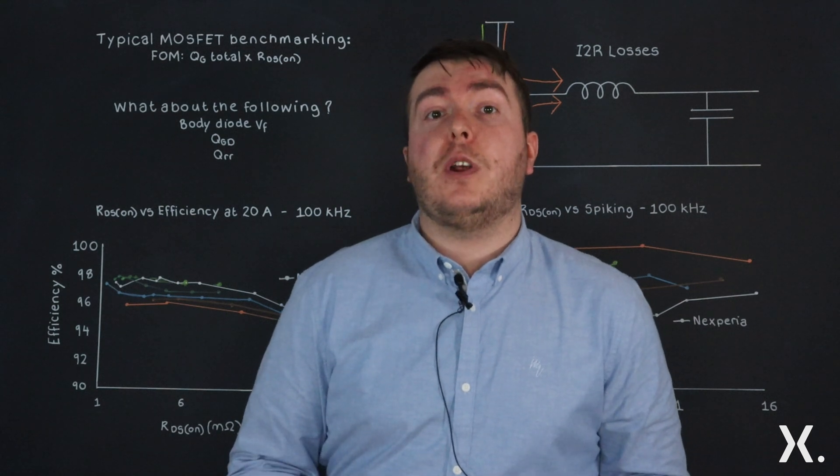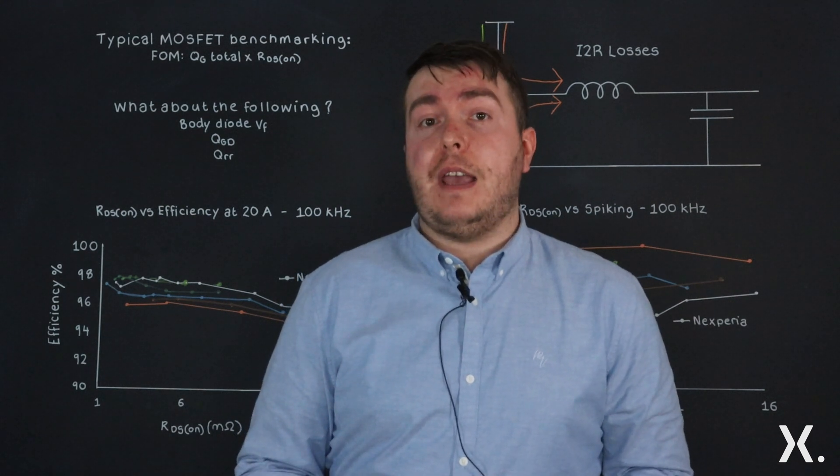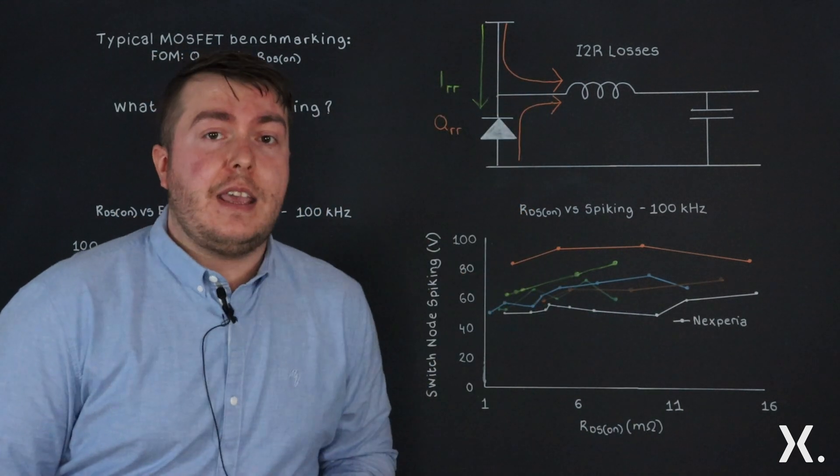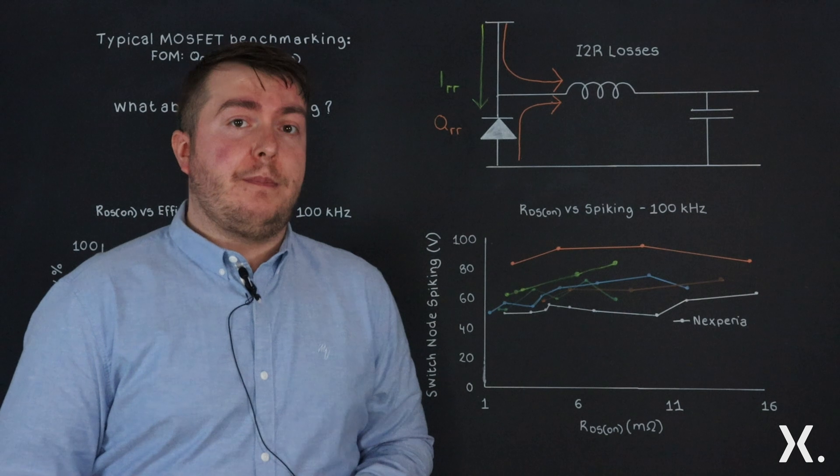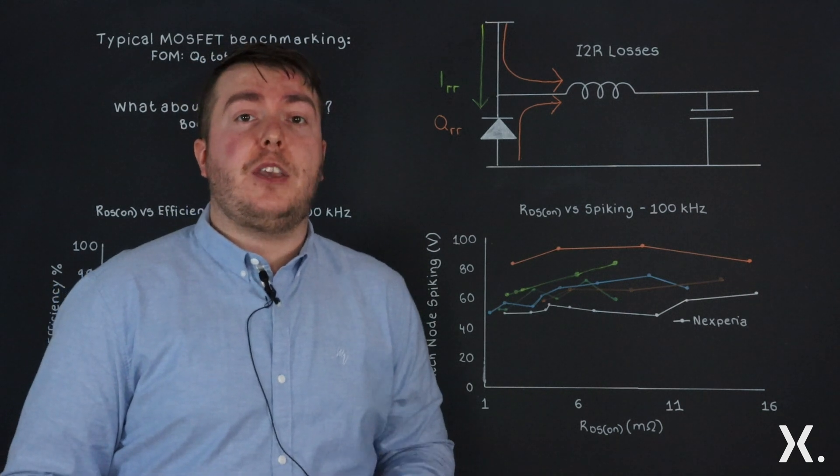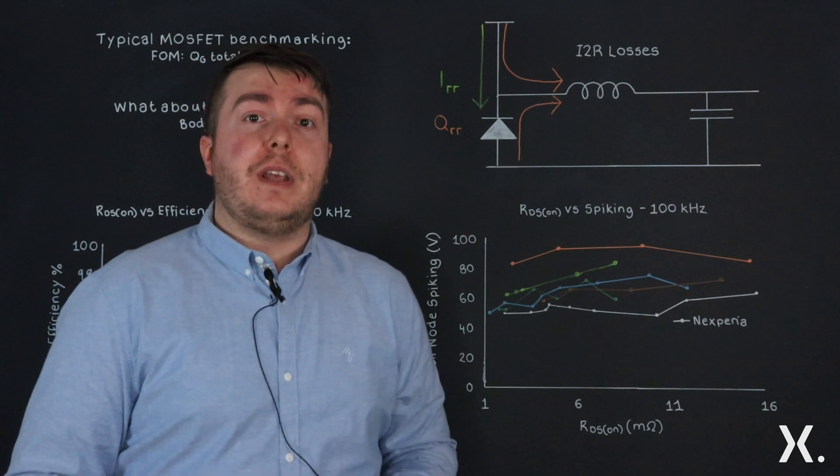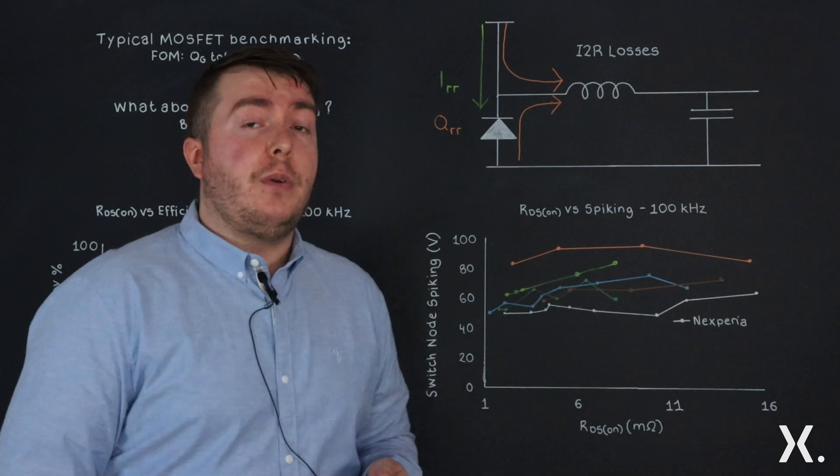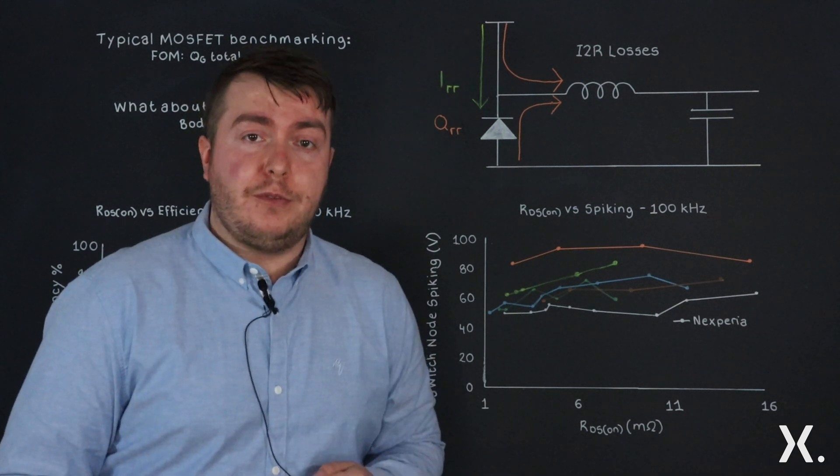In today's video, we're going to talk about the body diode VF and the QRR. What we have here is a simplified version of a buck converter. Both the body diode VF and the QRR play a significant role in increasing efficiency and reducing spiking, and they also play a role in both half bridge and full bridge configurations.